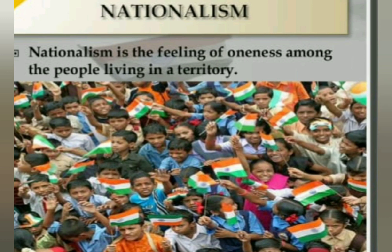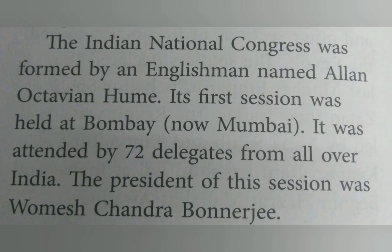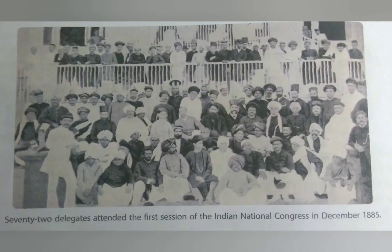The growing feeling of nationalism resulted in the formation of the Indian National Congress in 1885. The Indian National Congress inspired all the people of the country to fight against the British. It was formed by an Englishman named Allan Octavian Hume, and its first meeting was held at Mumbai, attended by 72 delegates from all over India. The president of this session was Womesh Chandra Banerjee. The purpose of the meeting was to awaken the spirit of unity among the Indians. The Congress met every year in different cities and became very strong, requesting the government to introduce policies to improve living conditions of the people.